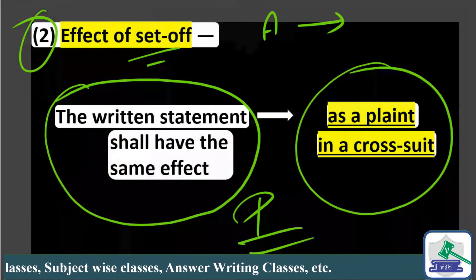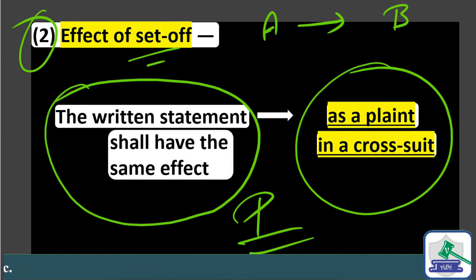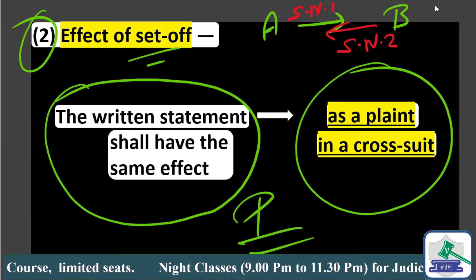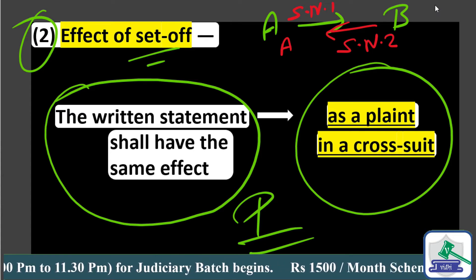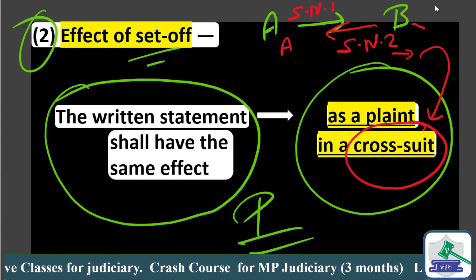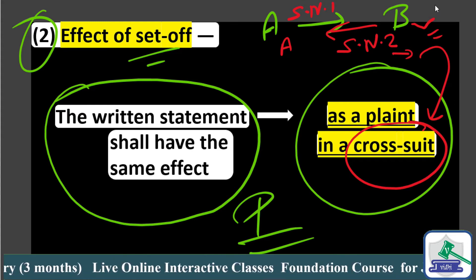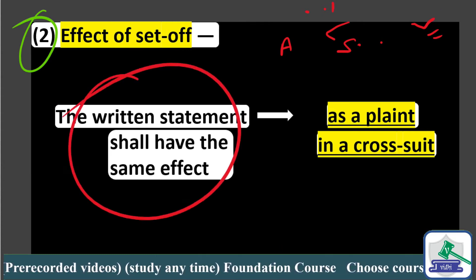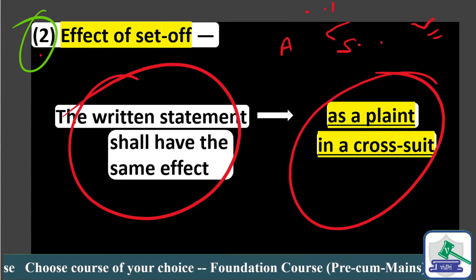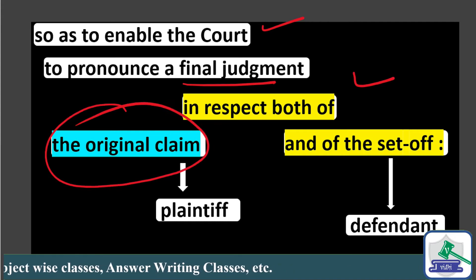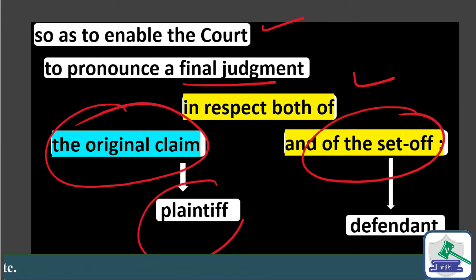So Suit Number One: A sues B. Then B says, 'if you file a suit against me, I will also file a suit against you' — Suit Number Two: B against A. So there are now two suits. The written statement containing set-off is treated like a plaint in the cross suit. When set-off is claimed, it has the same effect as a plaint in the cross suit — this is stated in Rule 6.